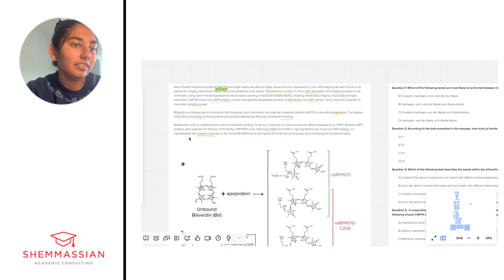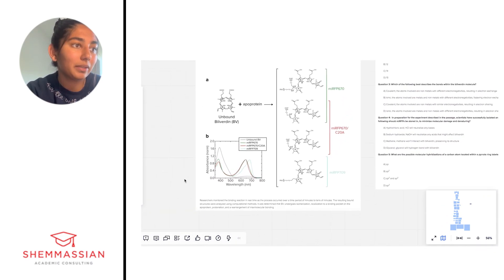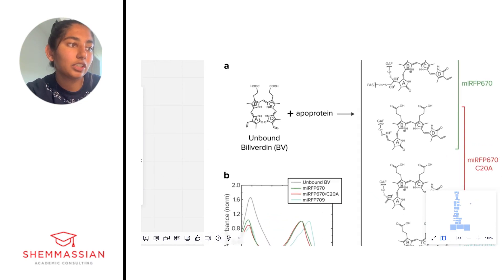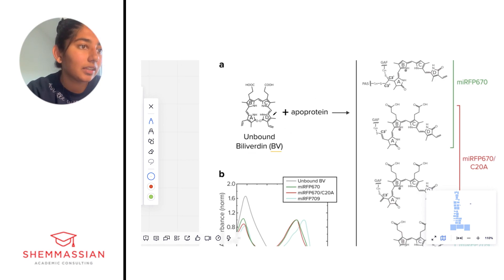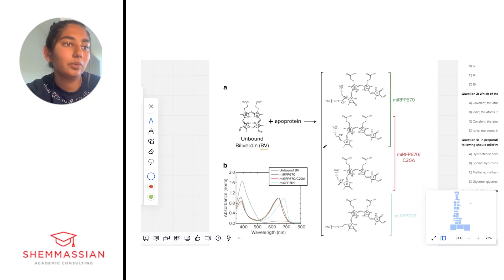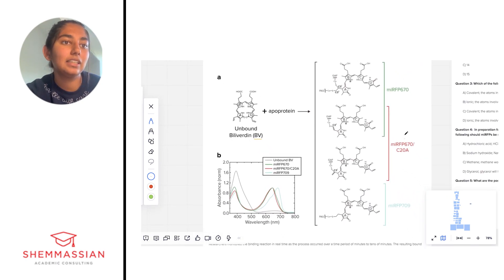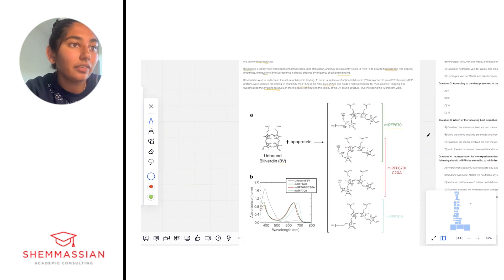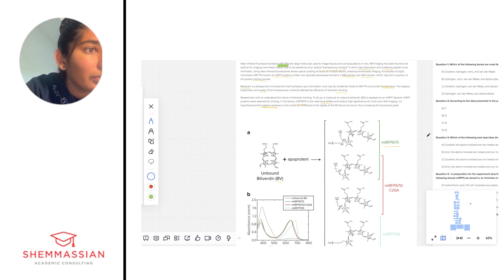Now we're getting into the figure. At first glance it looks pretty complicated—we see it has multiple parts. Part A looks like it's showing us the structure of BV. At first glance I'm noticing some rings, some double bonds, carboxylic acids, some nitrogens, and it looks like when you add an apoprotein you're beginning to see these MIRFPs that they're talking about. They are shown in different colors—this potentially has something to do with the shifts. We know that one of them was blue shifted, 670.